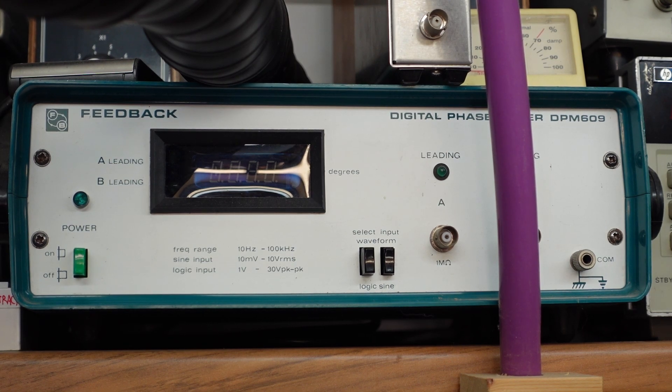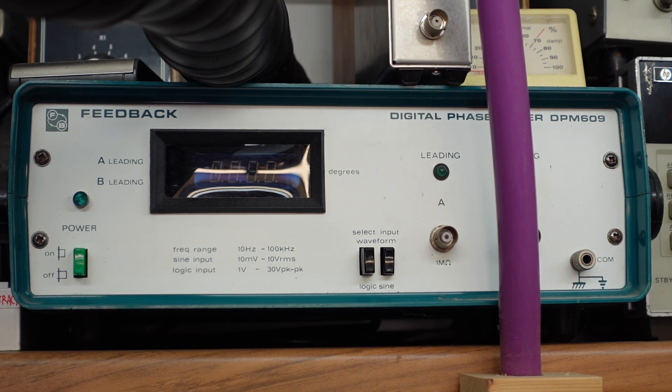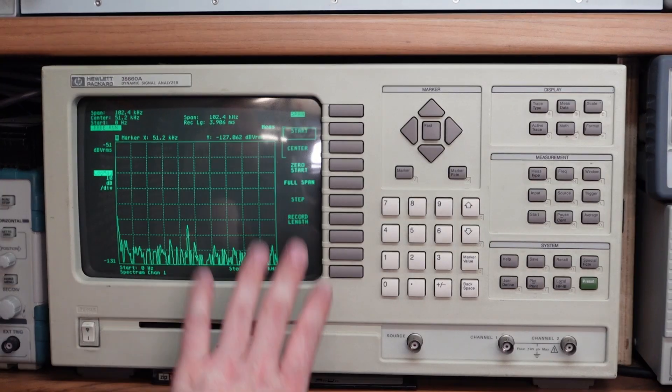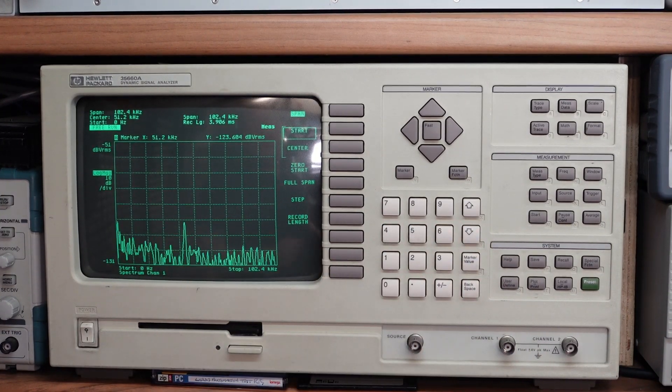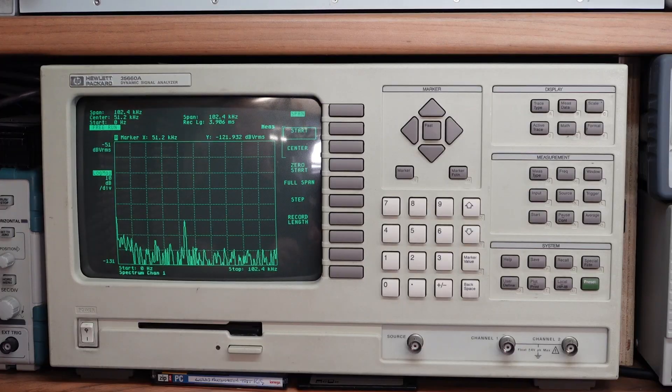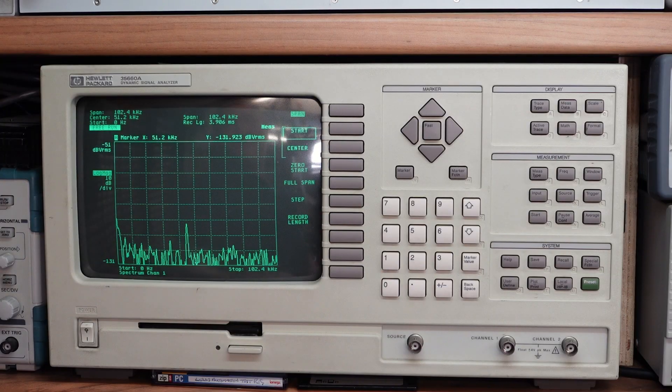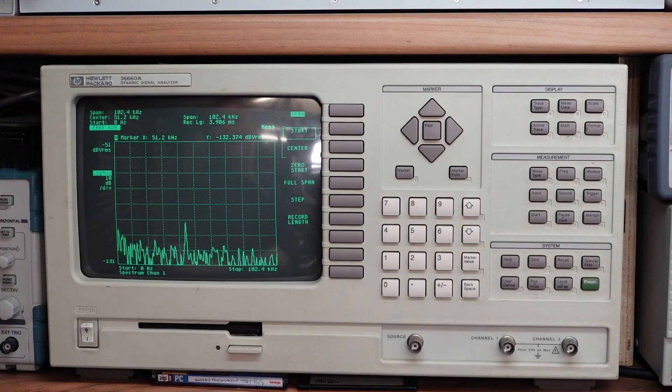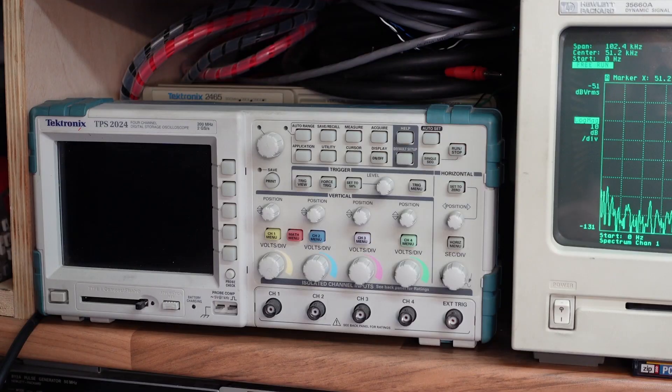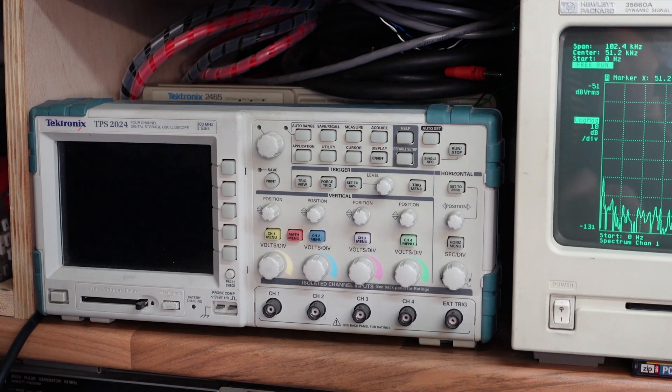If you want to know accurately what your phase shift is, that's the tool. And here we've got a dynamic signal analyzer—this is a two channel model and it does up to 100 kilohertz, so ideal for audio and mechanical stuff, which I suppose audio is. This is an HP 35660A.